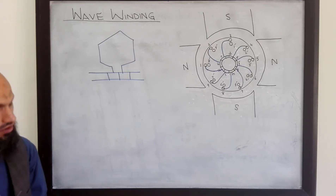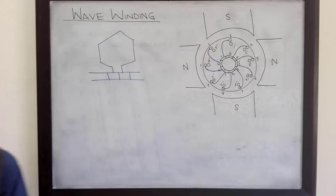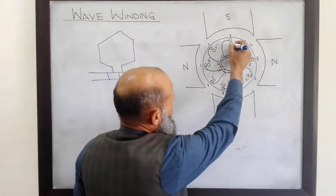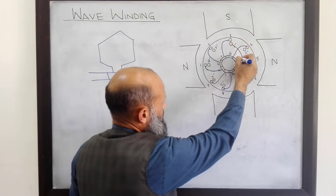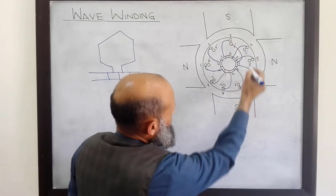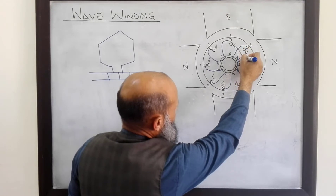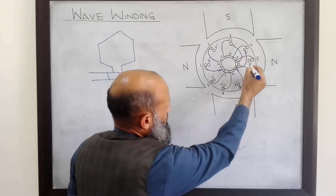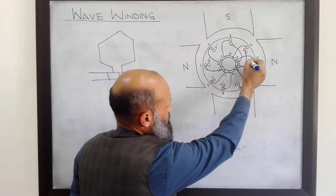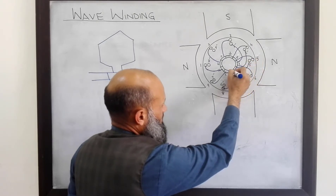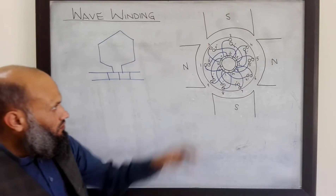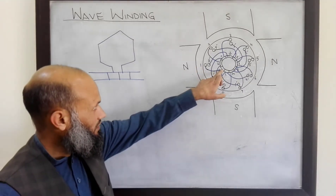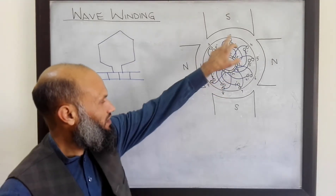Now the second side is connected like this: one-dash is connected to F, two-dash is connected to G, three-dash is connected to H, and so on. So one is connected to A, two is connected to B, and so on.